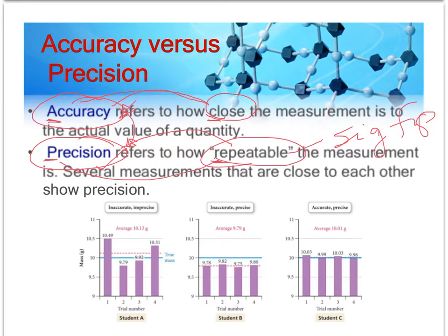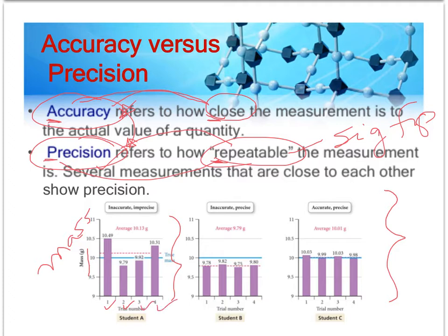Let's look at some graphs that tell us about the precision and accuracy of some measurements. On these graphs, you can see that along the y-axis is mass in grams. For each individual graph, there are four trials or four different experiments — they're weighing the mass of something four different times. On the piece of equipment used for the graph on the left, you can see they get a mass of about 10-point-something grams the first time.